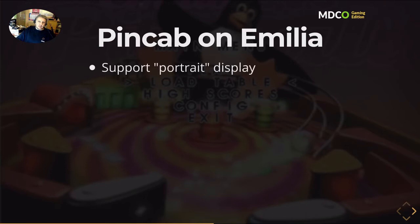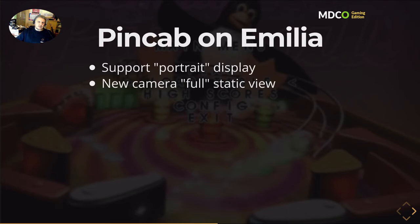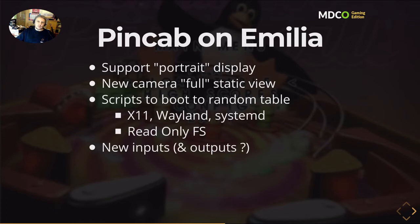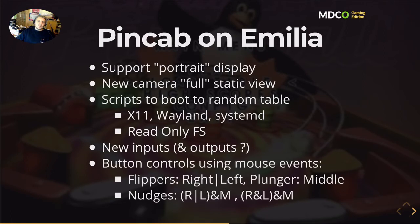To make a pin cab using Emilia, first you need to support a different display mode — portrait mode, with a static camera view displaying almost the entire table. I wrote scripts to boot directly to a random table, using X11. I also tried running on Wayland with a Systemd startup script. I wanted something easy to boot and turn off, so I'm using a read-only filesystem on a USB key. I also need to handle new input types and eventually new outputs. Currently I just need buttons to control the flippers. Using a mouse I can have two buttons; with two mice I have four buttons, though only two pairs are used. For flippers I use left and right buttons, the plunger uses the middle button, and I can emulate nudge effects by combining buttons.